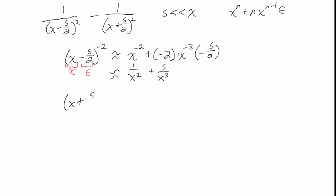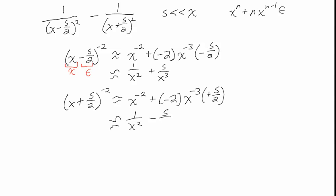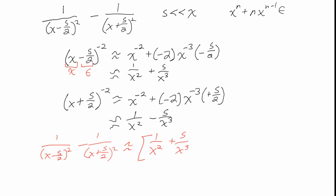For the second term, (x plus s/2) to the negative 2 approximates to x to the minus 2 plus (negative 2) times x to the minus 3 times (positive s/2), giving 1 over x squared minus s over x cubed. Combining both terms — since we're subtracting one from the other — the 1 over x squared terms cancel, and the s over x cubed terms add, giving approximately 2s over x cubed. This confirms the dipole field falls off as 1 over x cubed.